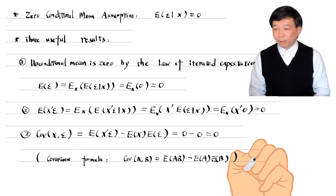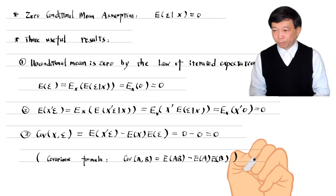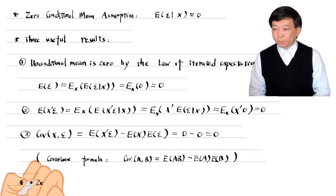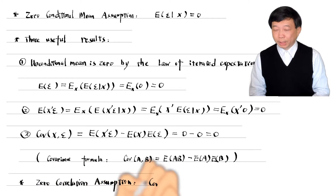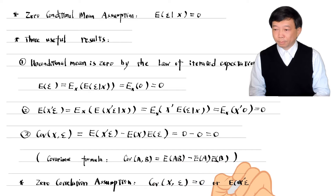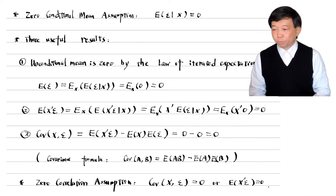Therefore, the zero conditional mean assumption implies no correlation between the error term epsilon and the explanatory variable x. The last two results are also called the zero correlation assumption, which is weaker than the zero conditional mean assumption.